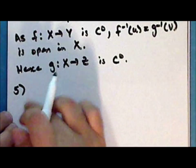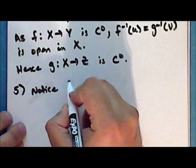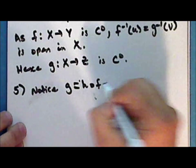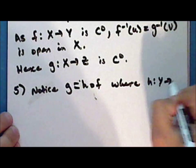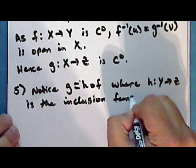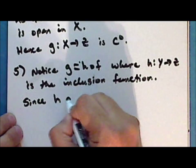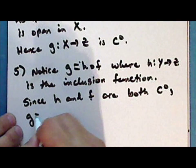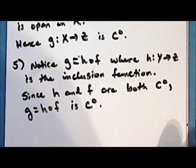Fifth statement: notice that the function G is the composition of a function H with the function F, where the map H mapping Y into Z is the inclusion function. Since the function H and the function F are both continuous, the function G, which is the composition of H and F, is also continuous. Note that the continuity of F mapping X into Y follows by statement 3.